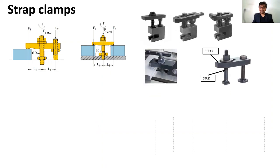Here you can see the actual strap and the actual stud. This is the part which is being rested, and this is the stud which, when tightened, applies force at this point or at this point. We have folded this part here, and we can have different designs of the straps — you can see there is some projection in one design.